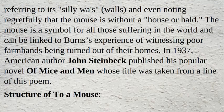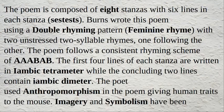The structure of 'To a Mouse': the poem is composed of eight stanzas with six lines in each stanza. Burns wrote this poem using a double rhyming pattern — feminine rhyme — with two unstressed, two-syllable rhymes, one following the other. The poem follows a consistent rhyming scheme of A-A-A-B-A-B.